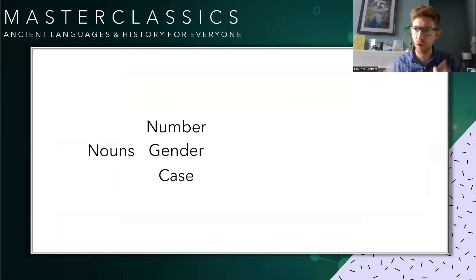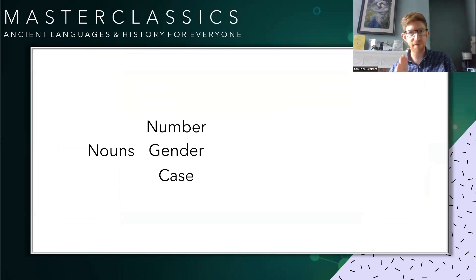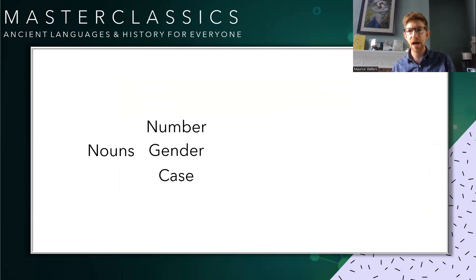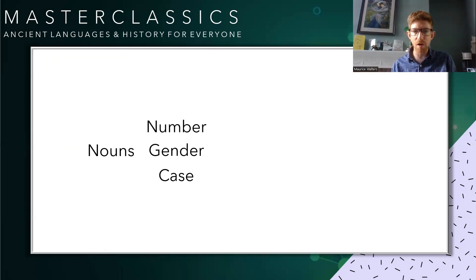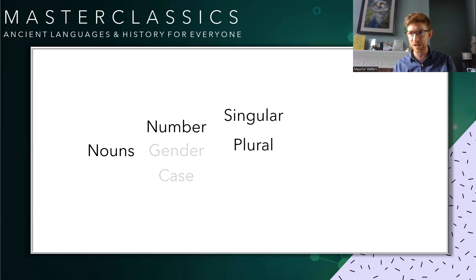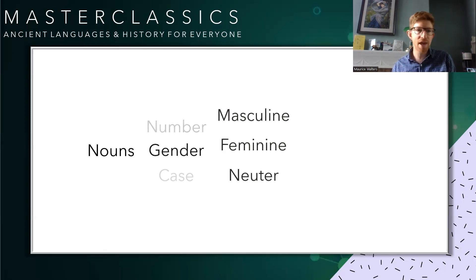We talked about verbs having different properties or qualities — person, tense, voice, mood, and all kinds of different things. Fortunately, nouns have a much smaller number of qualities we have to be aware of. They're just number, gender, and case. That's really easy to remember. Number we've already talked about — that's singular and plural, so we've got one table or many tables.